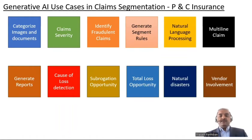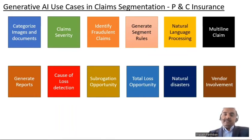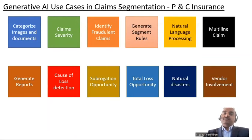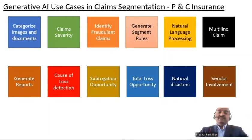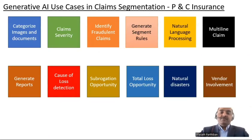Claim severity is very important in terms of claims segmentation. For example, if you have a claim with glass-only breakage versus a claim which is a total loss where the entire car is damaged, it makes a huge difference. A total loss claim has to be handled by an adjuster with extensive experience, whereas a glass-only claim can be automatically processed and payment sent to the customer. With AI having the ability to read large amounts of data from the past as well as current input given by customers, the system can very easily determine the severity of the claim.